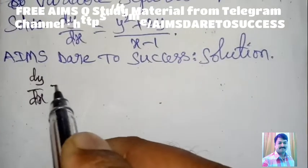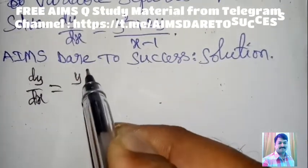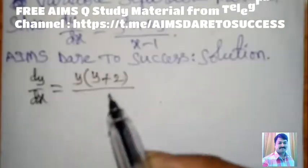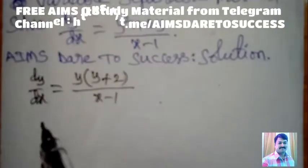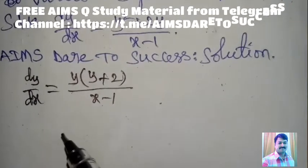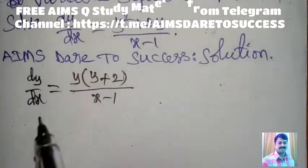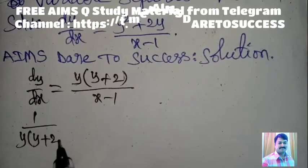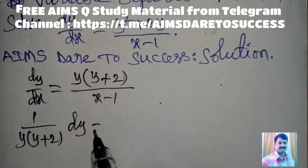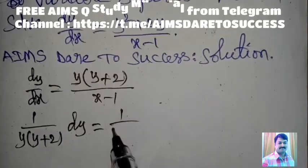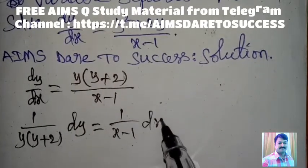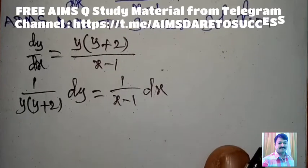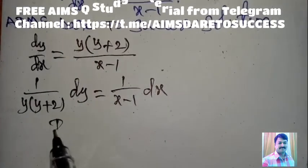Given dy/dx = (y² + 2y)/(x − 1). Factor y: y is common, so y(y + 2)/(x − 1). Separating variables: 1/[y(y + 2)] dy = 1/(x − 1) dx. Variables are now separated.